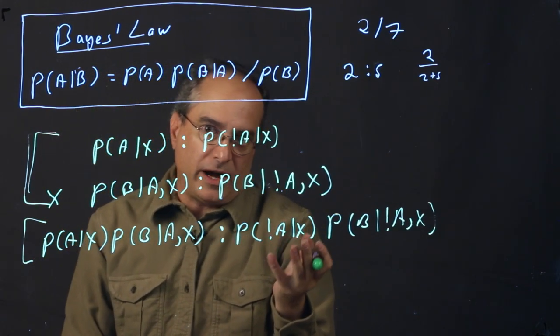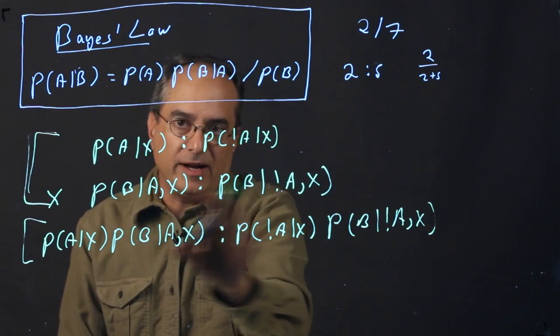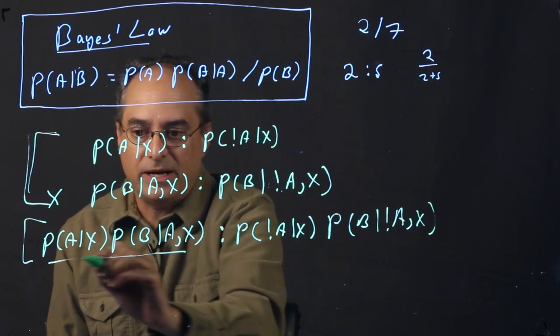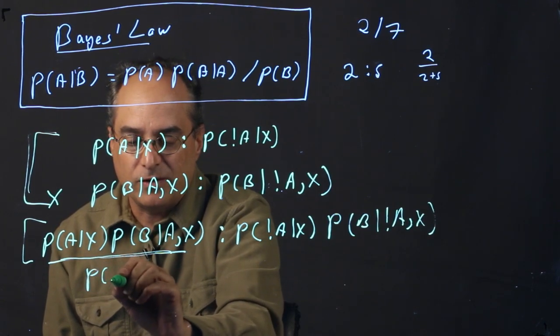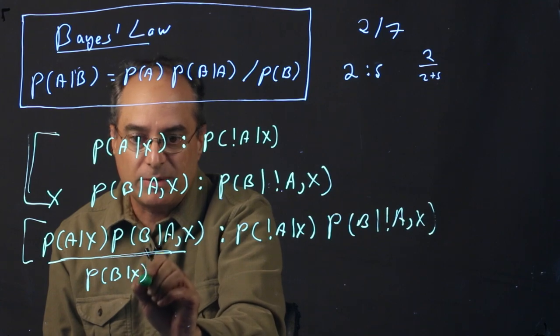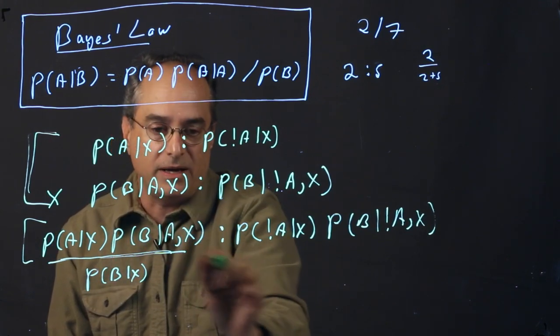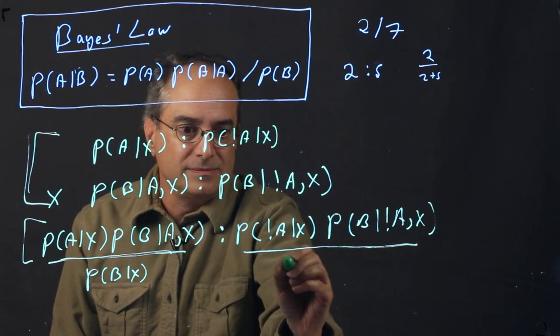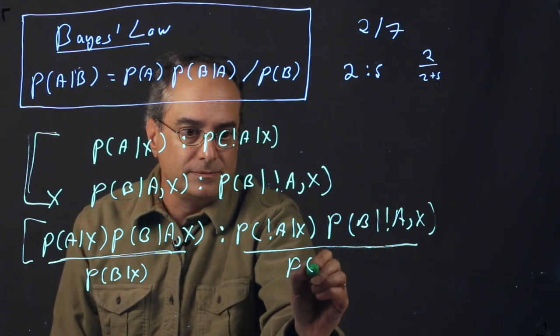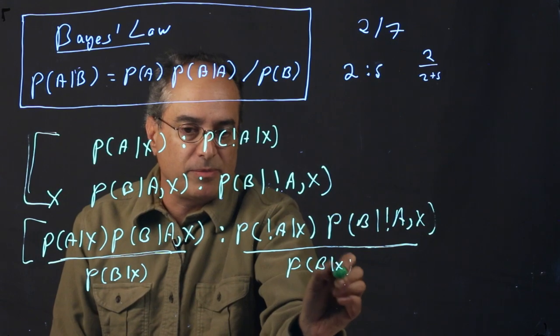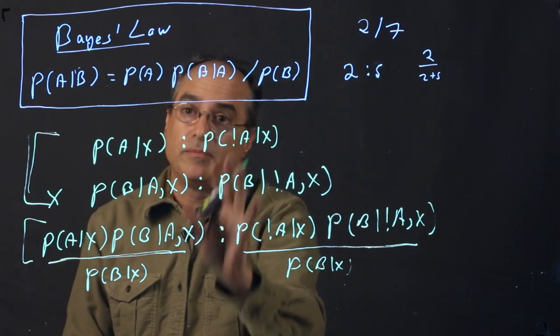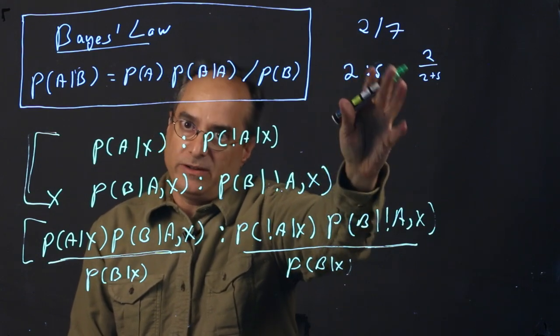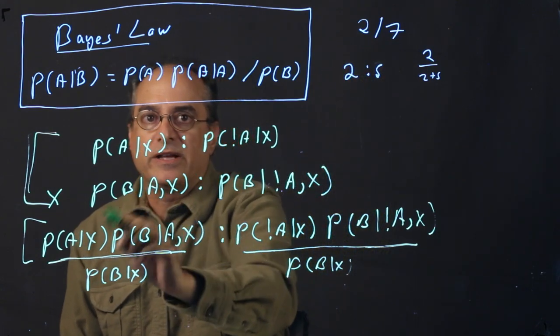Odds ratios are not affected by scaling, so I can divide both sides of this odds ratio by the same quantity, which I'm going to divide by P(B given X). This is the odds of seeing B given only the X information. And again, X may be no information, so this might just be P(B). We've divided both sides of this odds by the same quantity. So it's the same odds, just like 2 to 5 is the same as 20 to 50. Now, look at this.